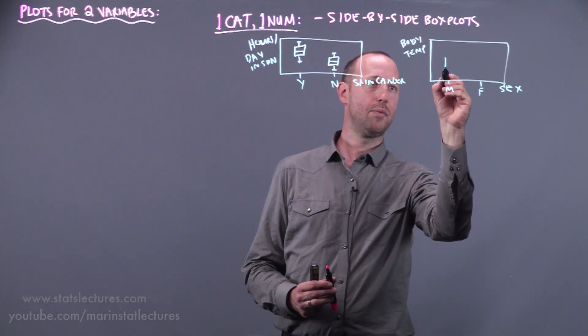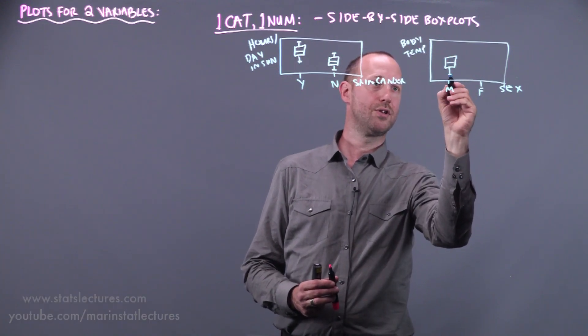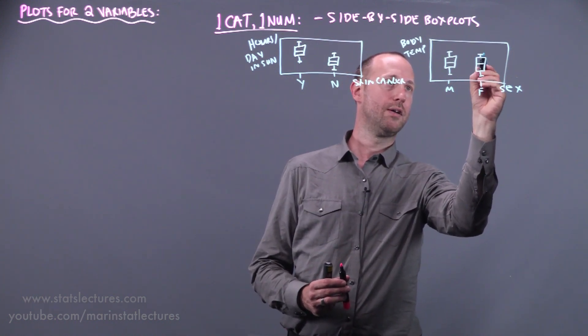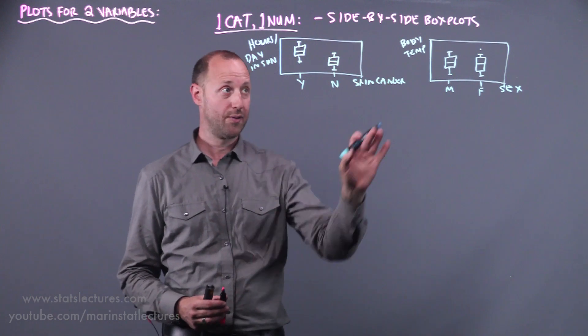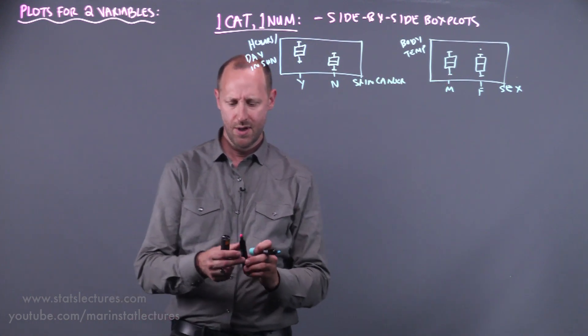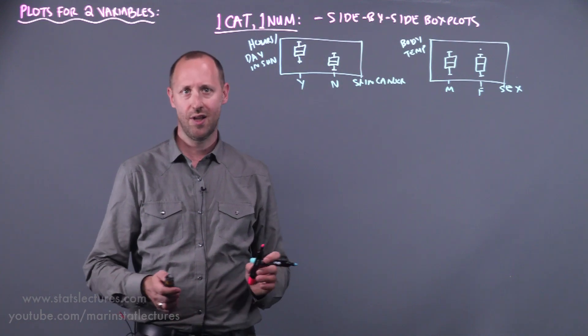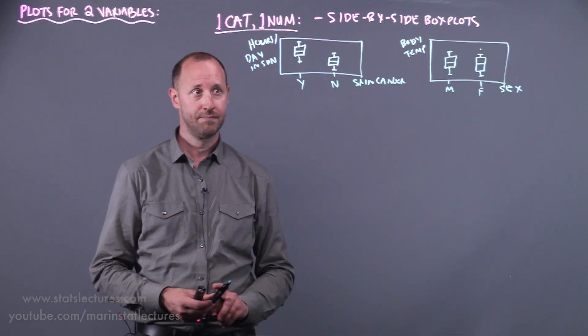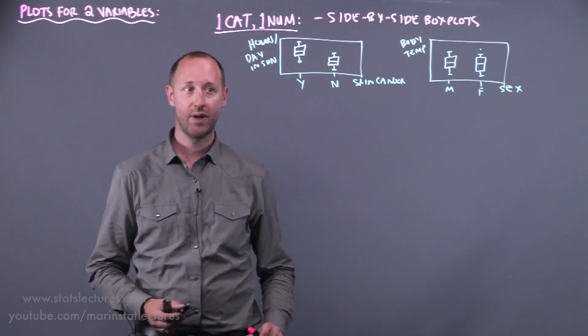And if we make a plot of the body temperature distribution for males and for females, it would probably end up looking pretty similar. So this is a visual of there being no association. So these are very commonly seen plots in a lot of papers or discussions. They really help us describe the relationship between one categorical and one numeric variable.